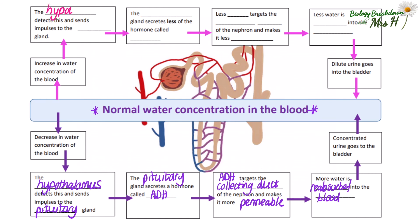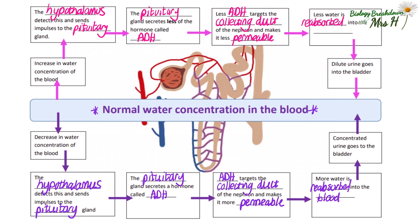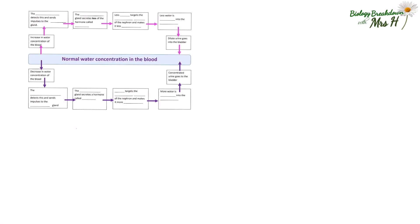If there is an increase in the water concentration of the blood, the hypothalamus detects this and sends impulses to the pituitary gland. The pituitary gland secretes less ADH. With less ADH targeting the collecting duct, the collecting duct becomes less permeable. Less water is reabsorbed by osmosis into the blood, which means more water ends up leaving the kidney via the nephron — so there will be more water in the urine and the urine will be quite dilute.